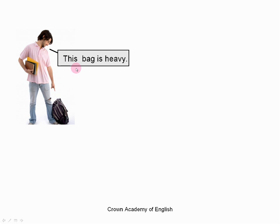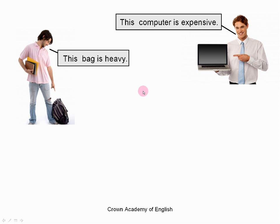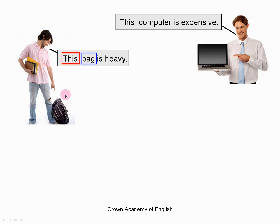Now the man is saying, this bag is heavy. And this man is saying, this computer is expensive. So now it is slightly different — we are using the word 'this' but we also have a noun. We are not saying 'this is'; we are saying 'this' with a noun — 'this bag'. So here we are talking about a specific bag. That is the meaning of 'this'. We are not talking about another bag; we are talking about this specific bag, which is singular and close to the man. So we use the word 'this'.